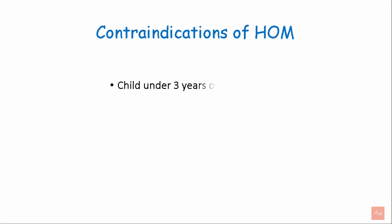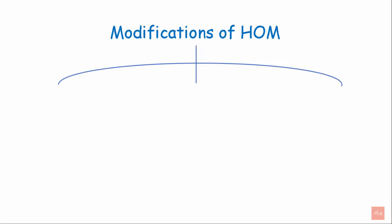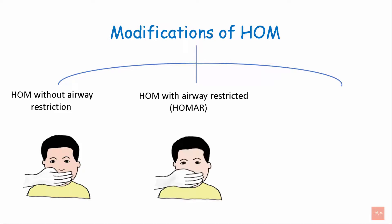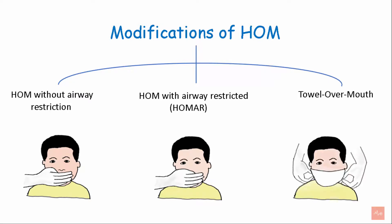Contraindications: children under 3 years of age and physically or mentally challenged children. There are a few modifications of HOM. First is HOM without airway restriction, wherein the nose is not covered. Second is HOMER — HOM with airway restriction — wherein the nose is covered and the airway is restricted. Third is towel over mouth.